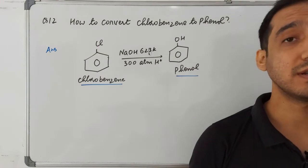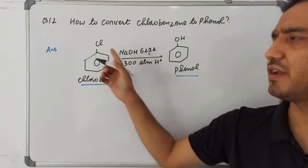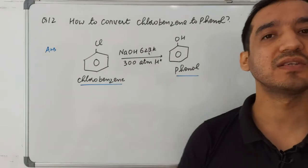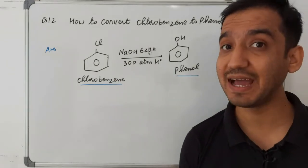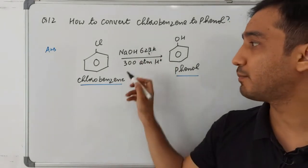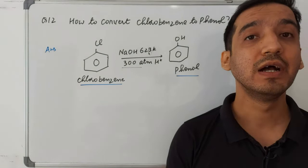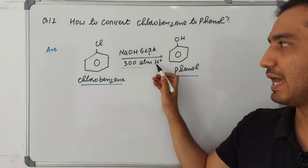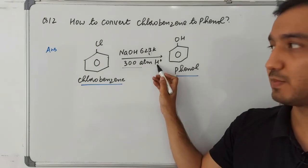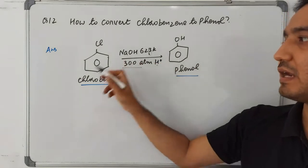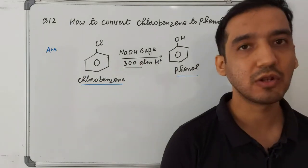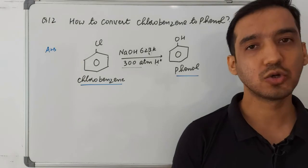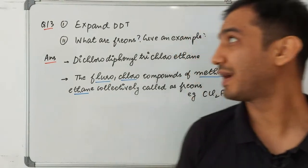Question twelve: convert chlorobenzene to phenol. This is a nucleophilic substitution reaction and is very difficult. You take NaOH at a very high temperature of 623 K and high pressure of 300 atmospheres, then react with acid (H⁺). These conditions result in the formation of phenol — chlorine gets replaced by the OH group.